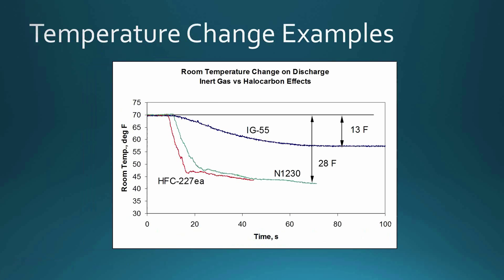There is a slight cooling effect. With IG55, for example, there is a temperature drop over about 60 seconds of around 13°F, which is about 7°C. So there's a little bit of cooling in the room, but not all that much.